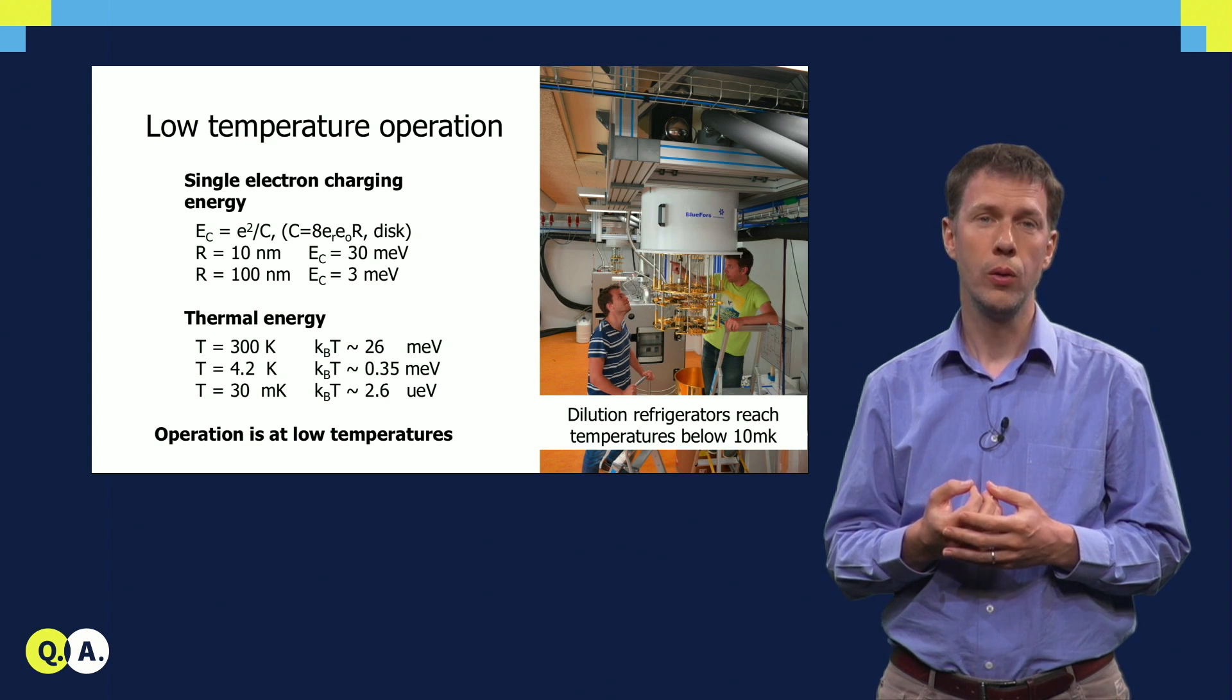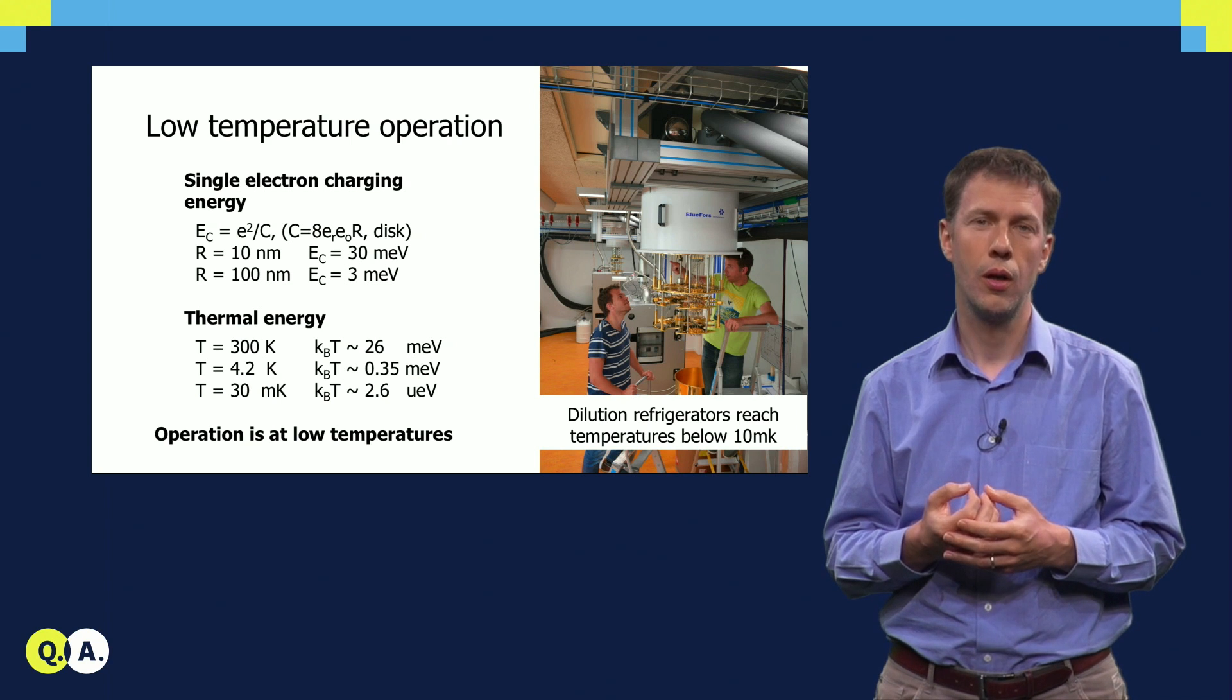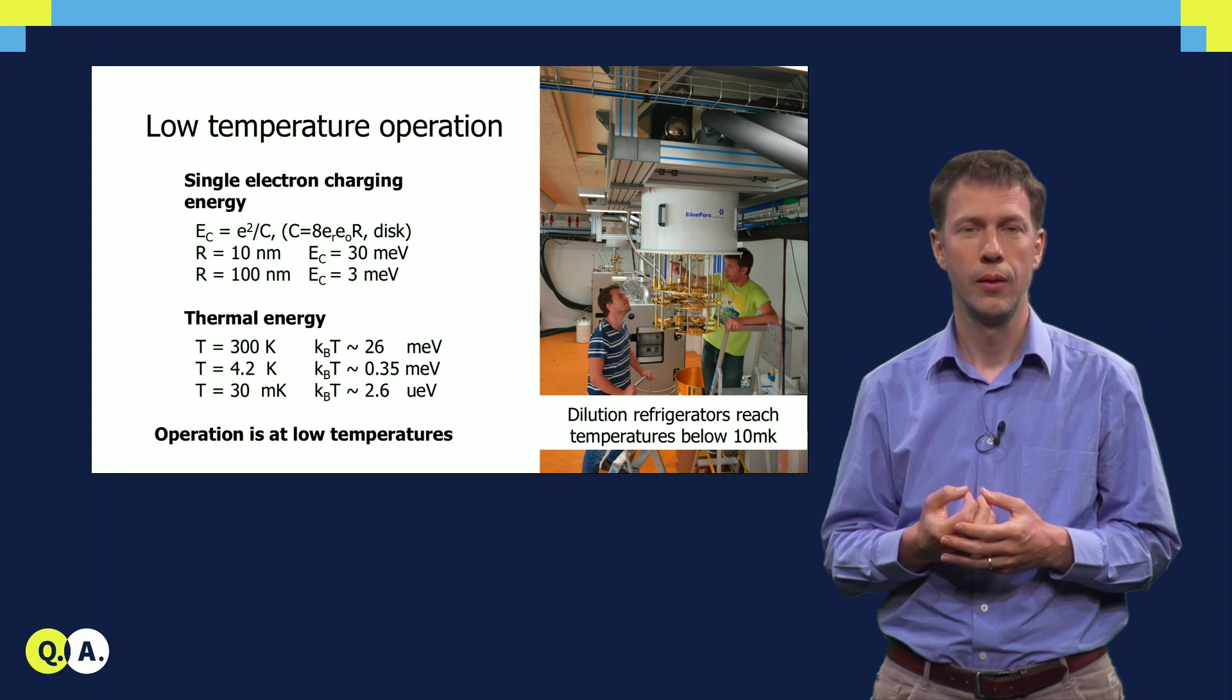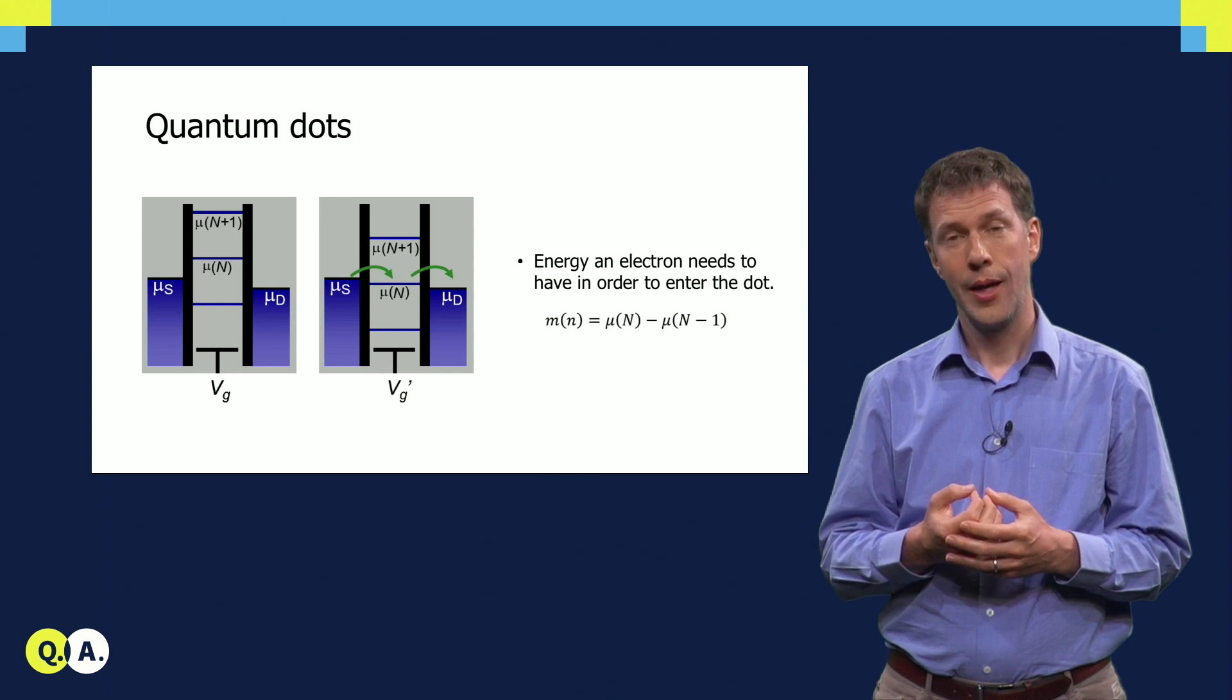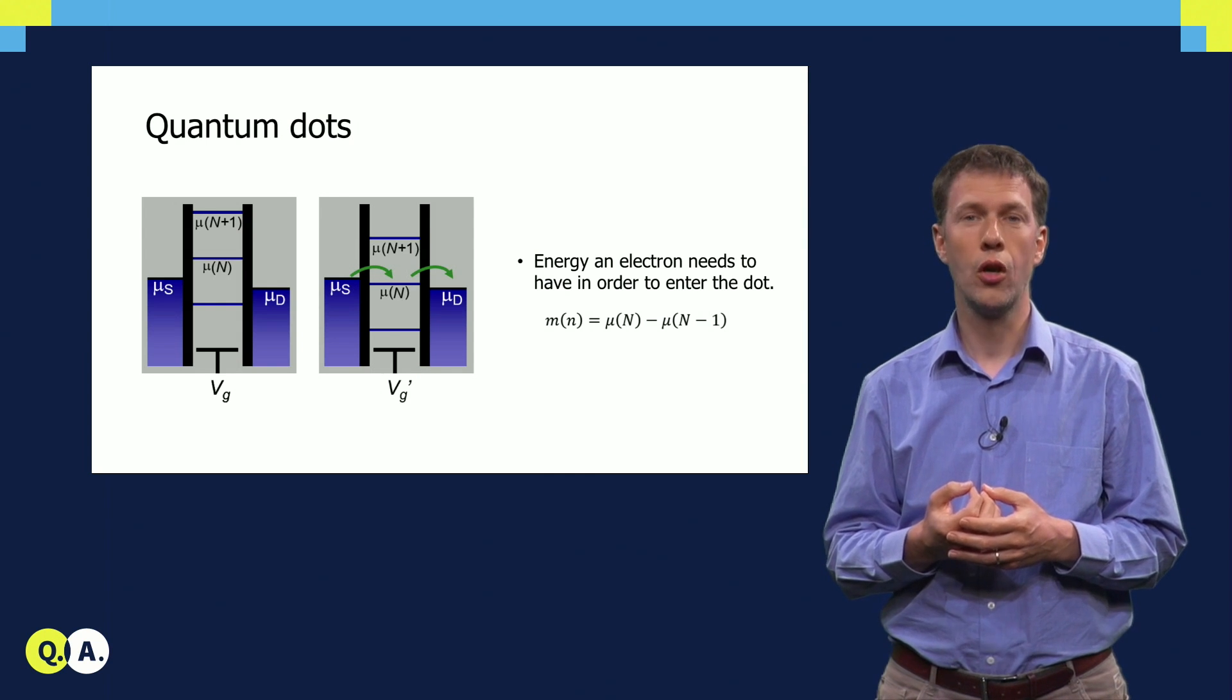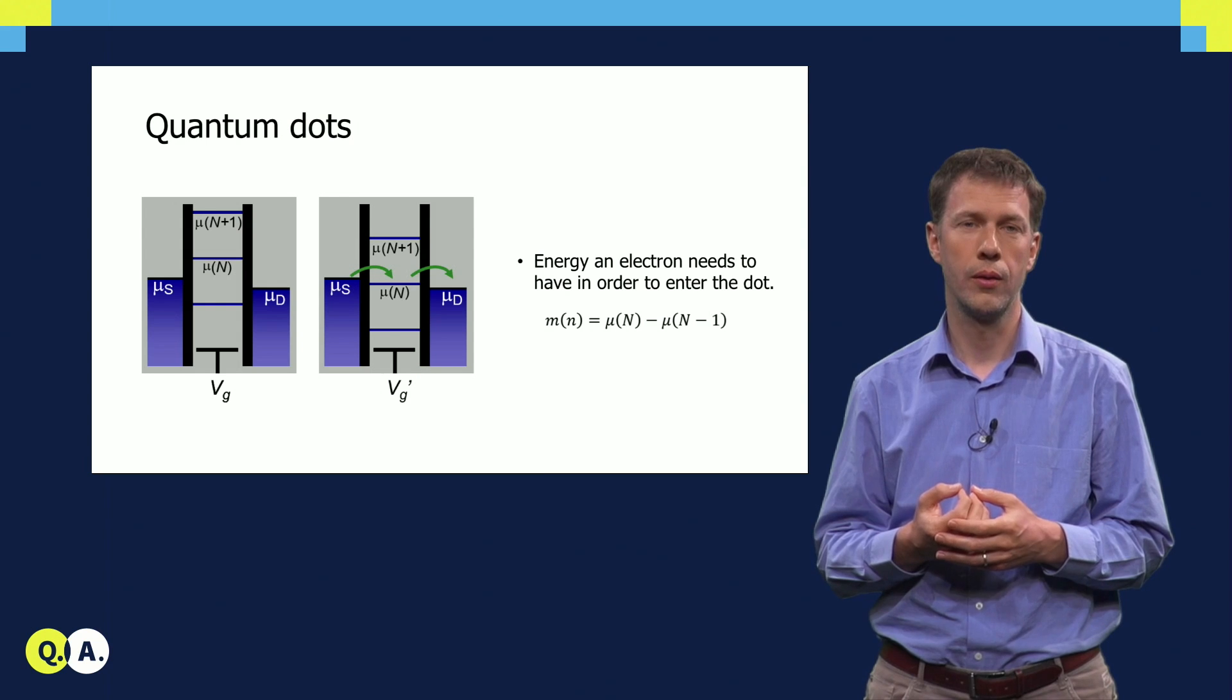But how do we know that individual charges are being added to the island? The standard method is to look at the current that flows between the contacts through the quantum dot, the central island.